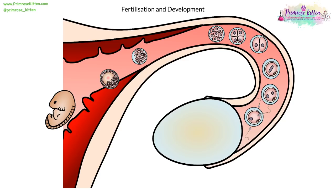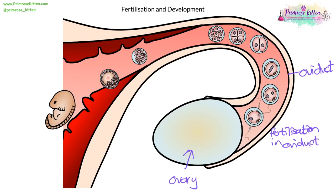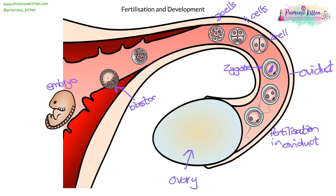Fertilization and development actually happens in the oviduct. The ovary is here, and this is the oviduct. The sperm will fertilize the egg in the oviduct. The two nuclei come together, become one nucleus — it divides into two cells, four cells, eight cells. Coming down into the uterus, you get more multiples of cells, it becomes a blastocyst, and implants itself into the uterine lining.